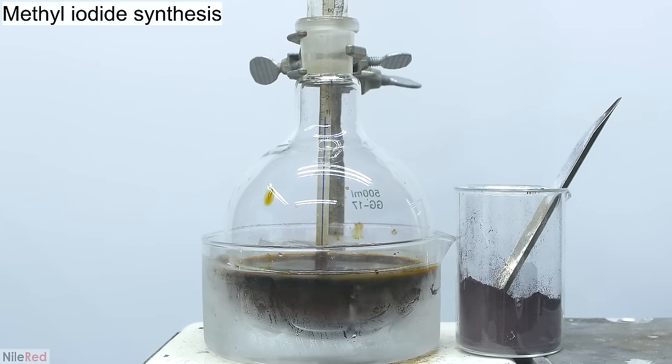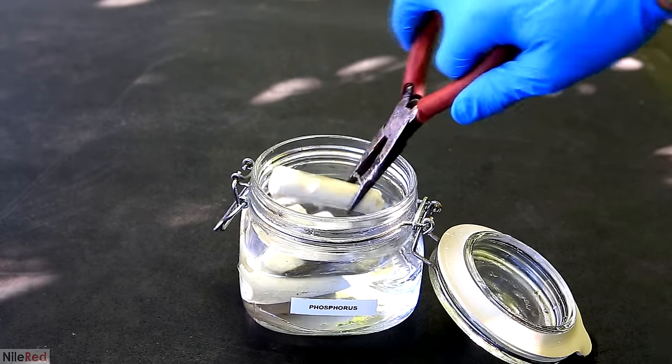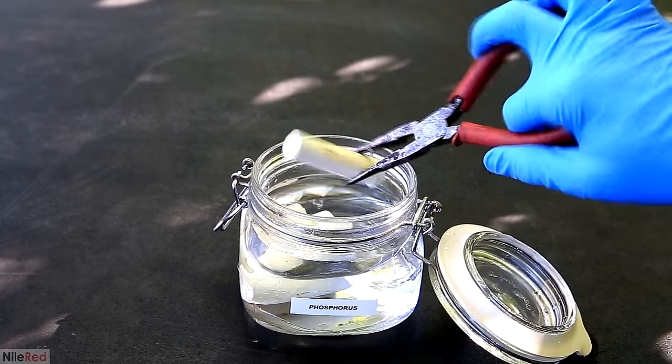Anyway, with that being said, red phosphorus is a useful reagent in organic chemistry. In the past, I've used it to make things like methyl iodide and in the future, I plan to convert it to white phosphorus.